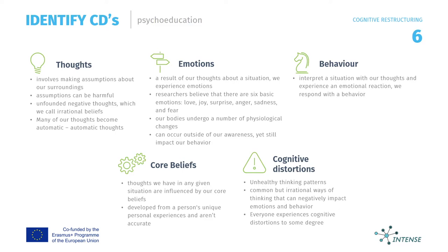Before jumping into the doing part of cognitive restructuring, it's important for clients to understand what cognitive distortions are and how powerful they are in influencing one's mood. Start with psychoeducation, referring to the cognitive model, by identifying irrational negative thoughts. This is trickier than it sounds.